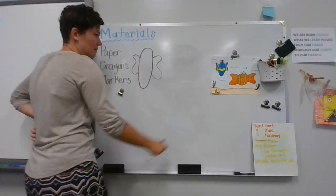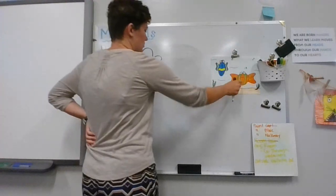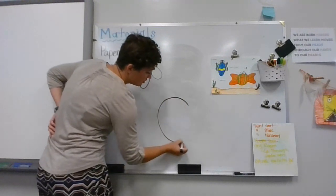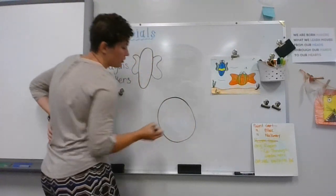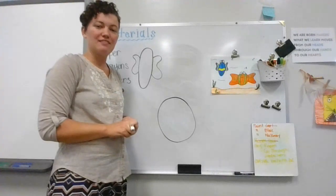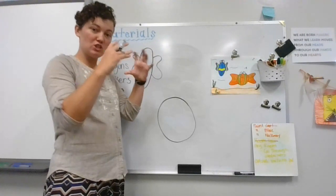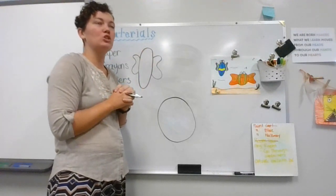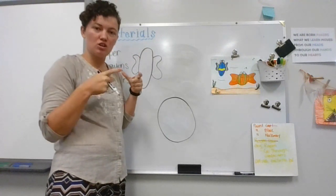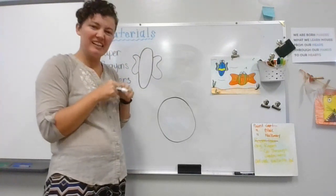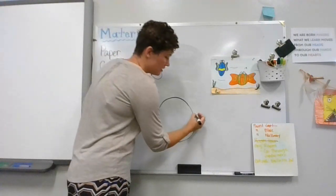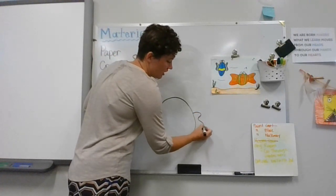Now we have to do our big round one — remember, that's a circle. Circles are round like balls, right? Like if you play basketball, you've seen a circle. If you have a basketball hoop, it's a circle. If you play soccer, tennis — any of those shapes have circles in them. All right, so we're going to do our organic shape for the fins.